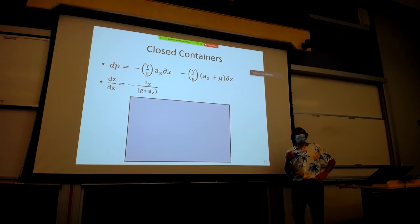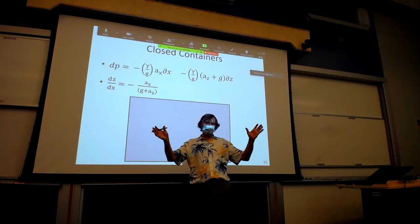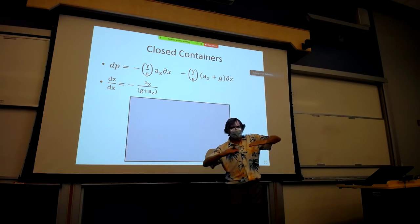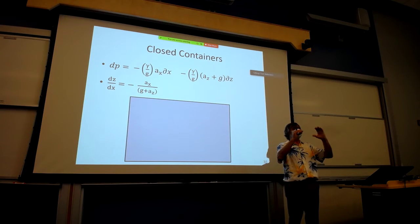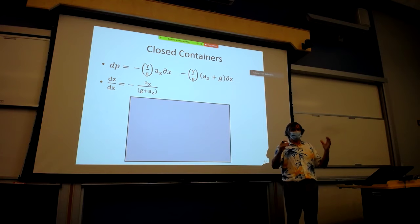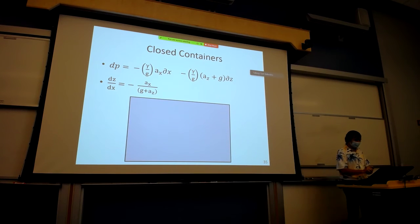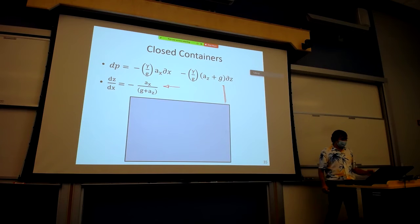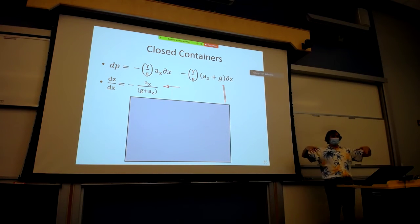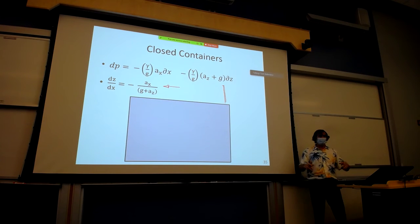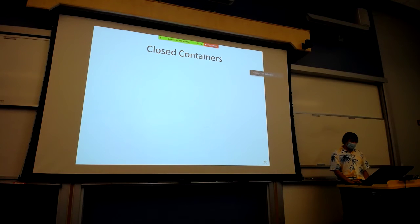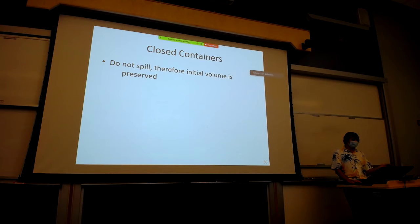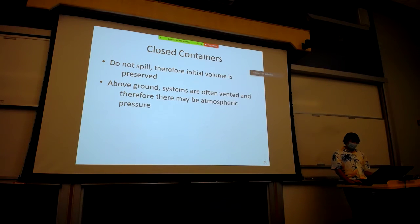In a closed container, by definition you're not losing fluid. The pressure distributions are changing and dz/dx is identifying contours of constant pressure, but no fluid is lost. In practical situations these systems are often vented somehow, so you're not creating pressure vessels with excessively high or low pressures. The big difference with closed containers is the initial volume is preserved, and real engineered systems are very often vented to the atmosphere.